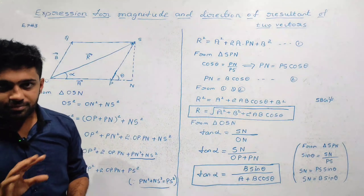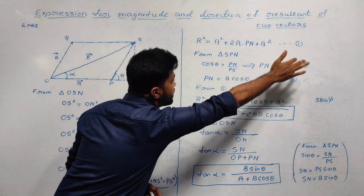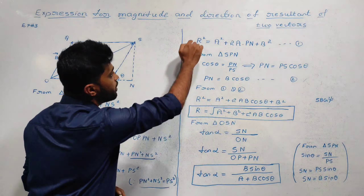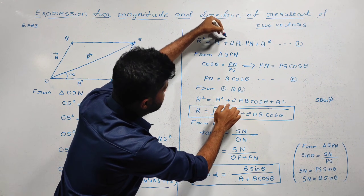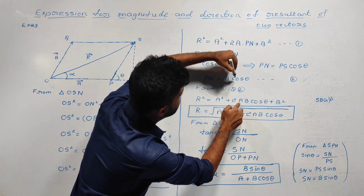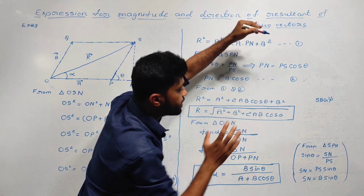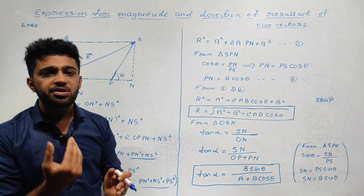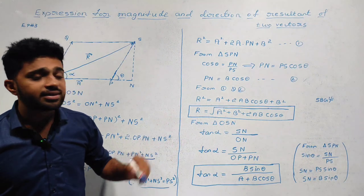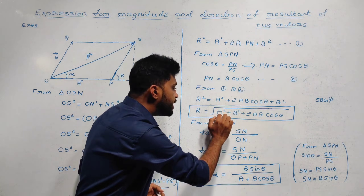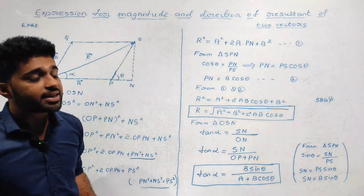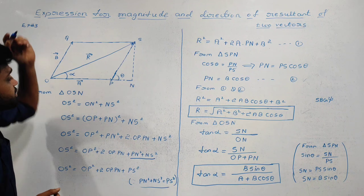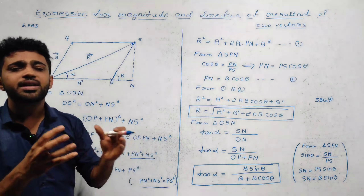From equations 1 and 2, substituting PN equals B cos theta: r squared equals a squared plus 2a times B cos theta plus B squared. Therefore, r is equal to the square root of (A squared plus B squared plus 2AB cos theta). This is the expression for the magnitude of the resultant of these two vectors.